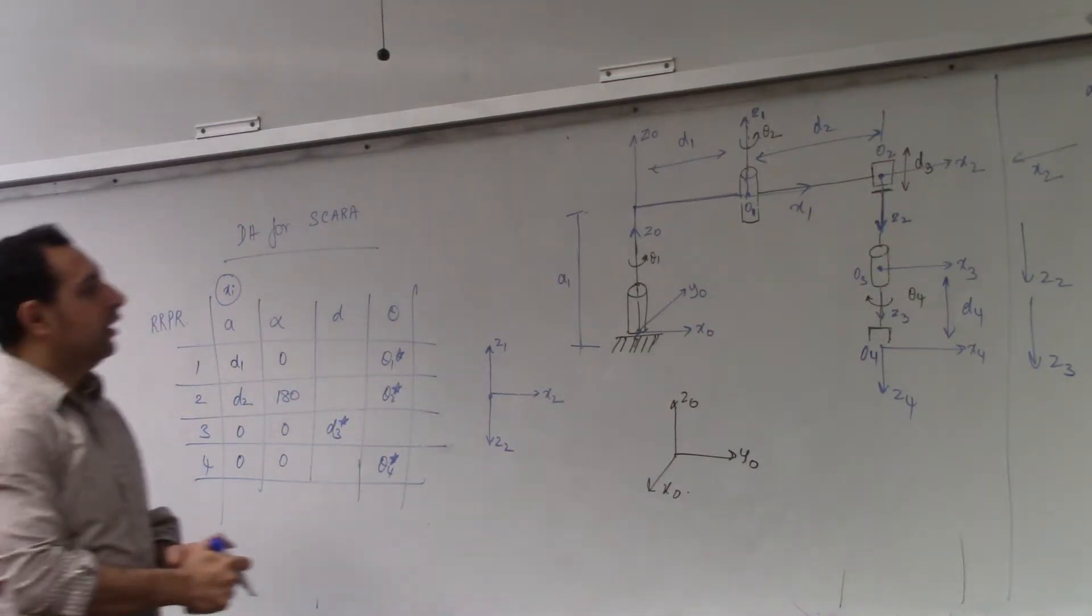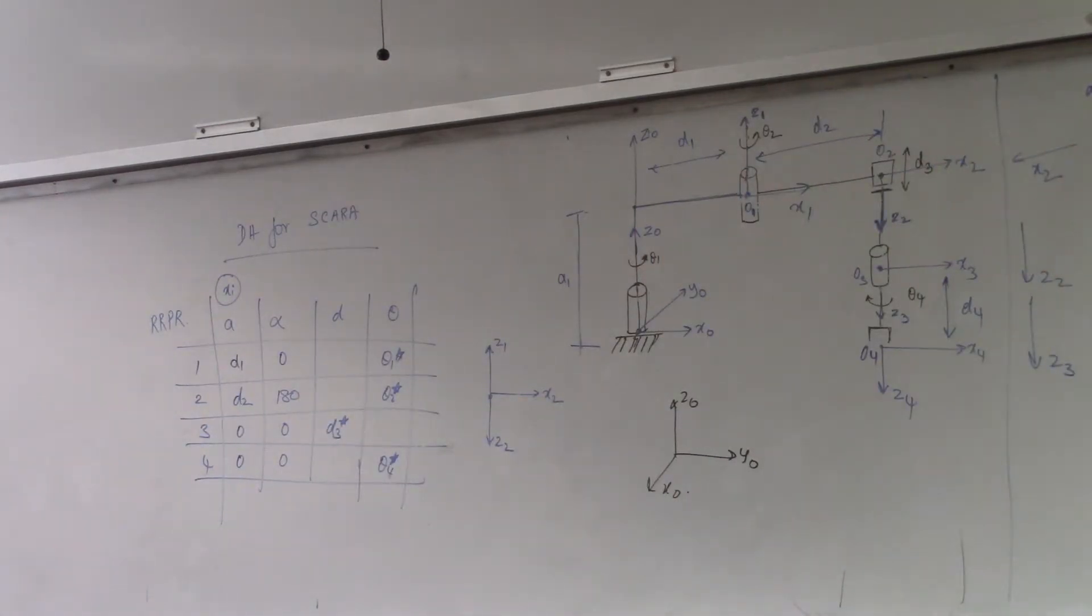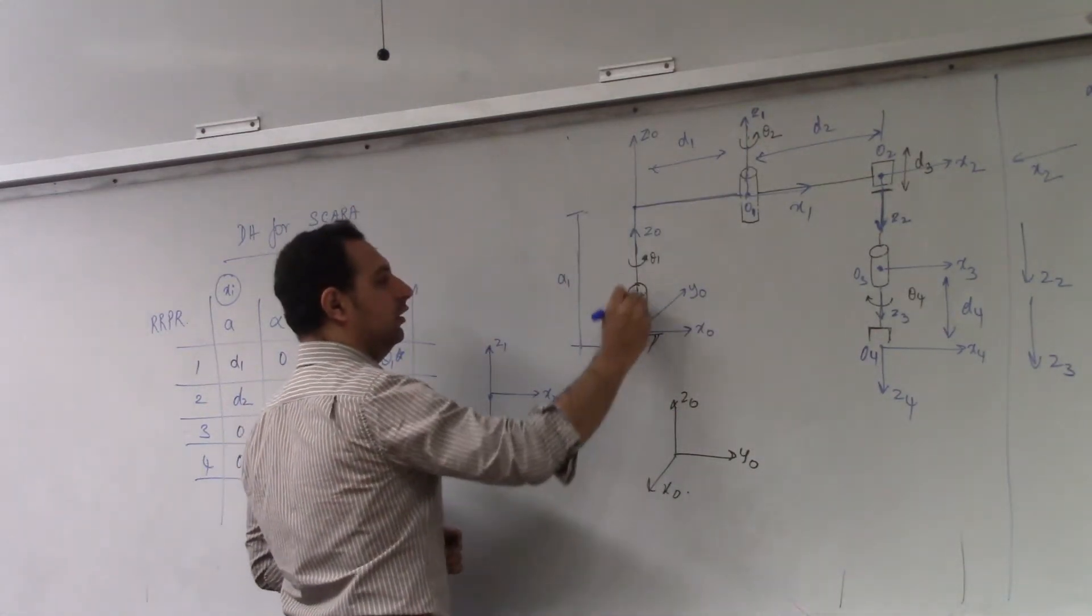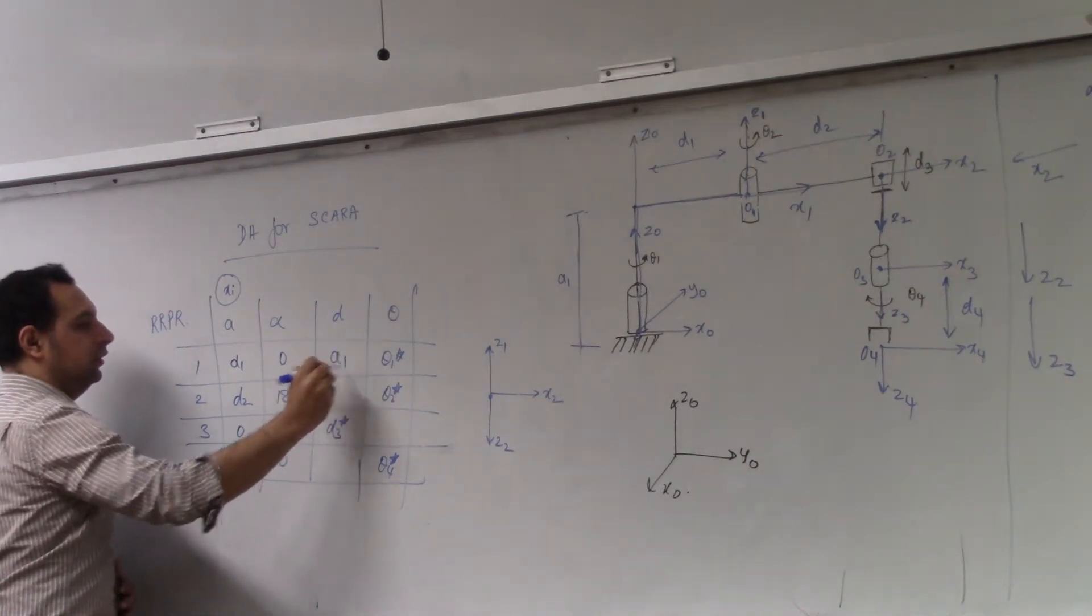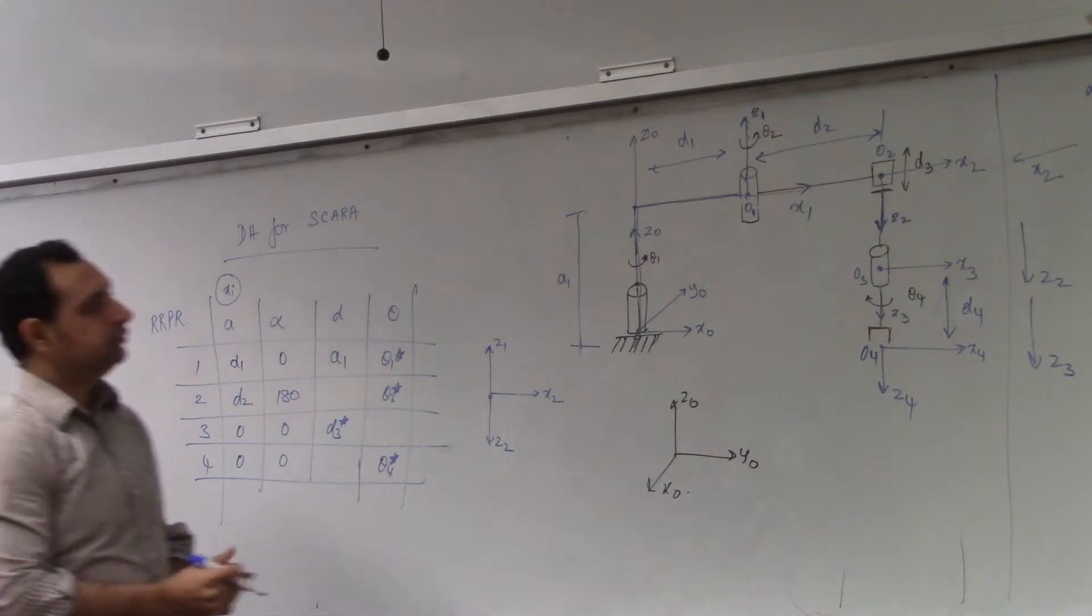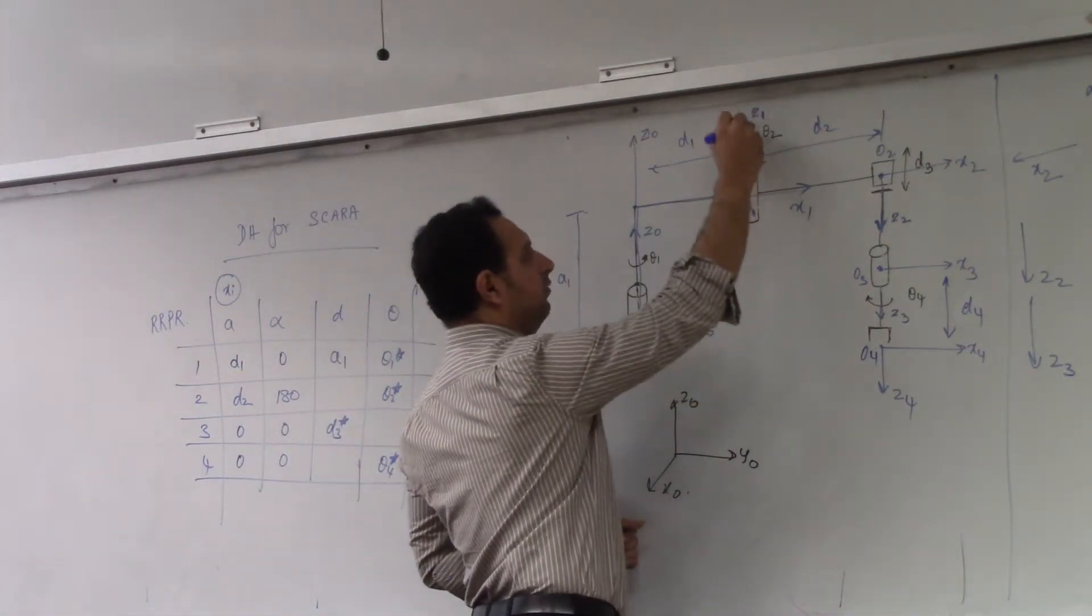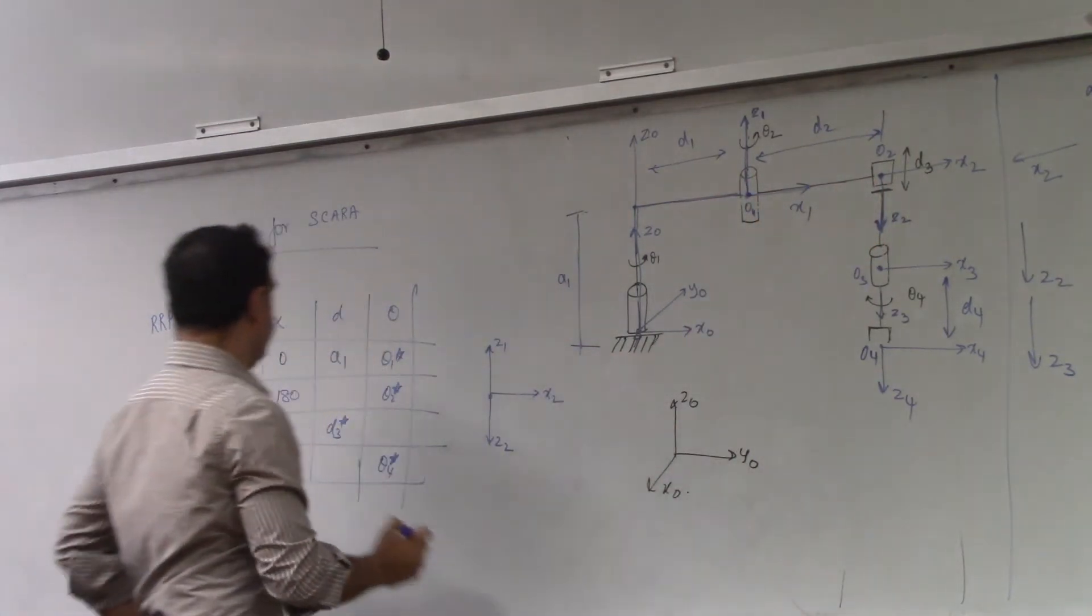Okay. Let's talk about D. What is D1? A1. So D1 is measured along Z0 till you intersect with the X axis. So this will be A1. D2? Zero. D2, yes. D2 is measured along Z1 where it intersects with X2. X2 means here. So this will be zero.